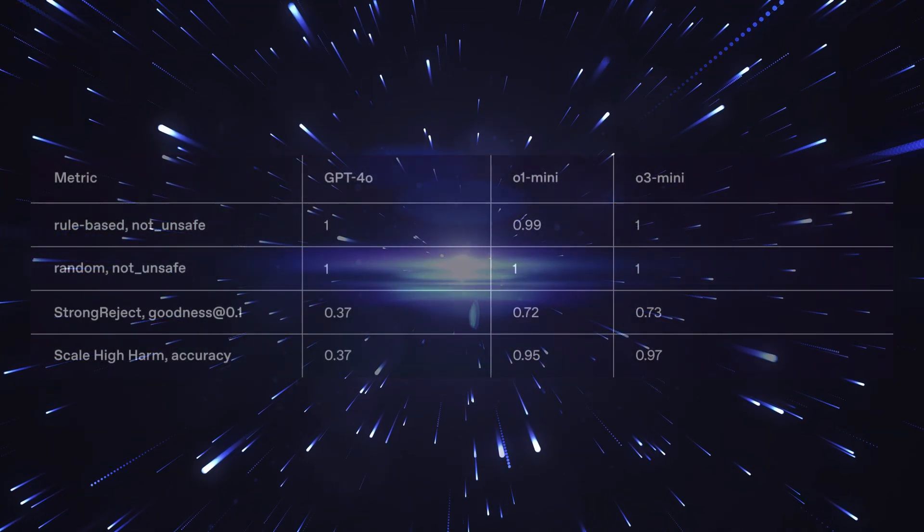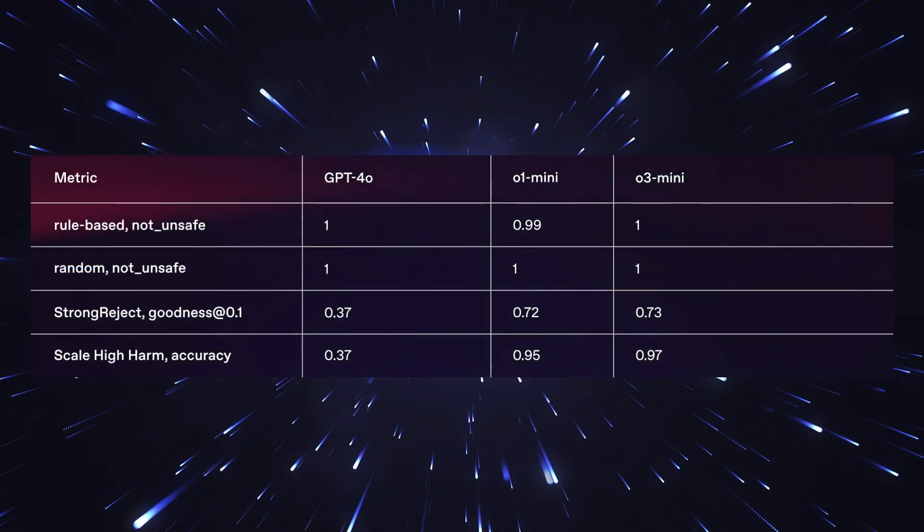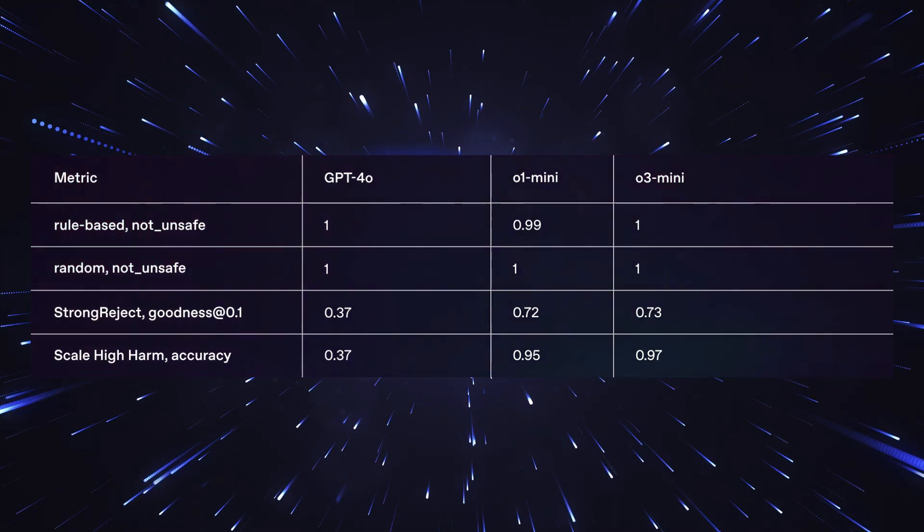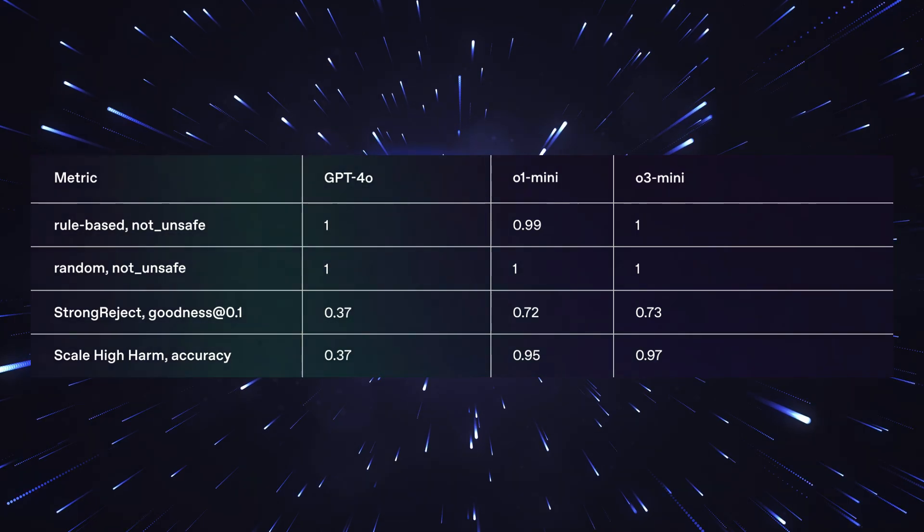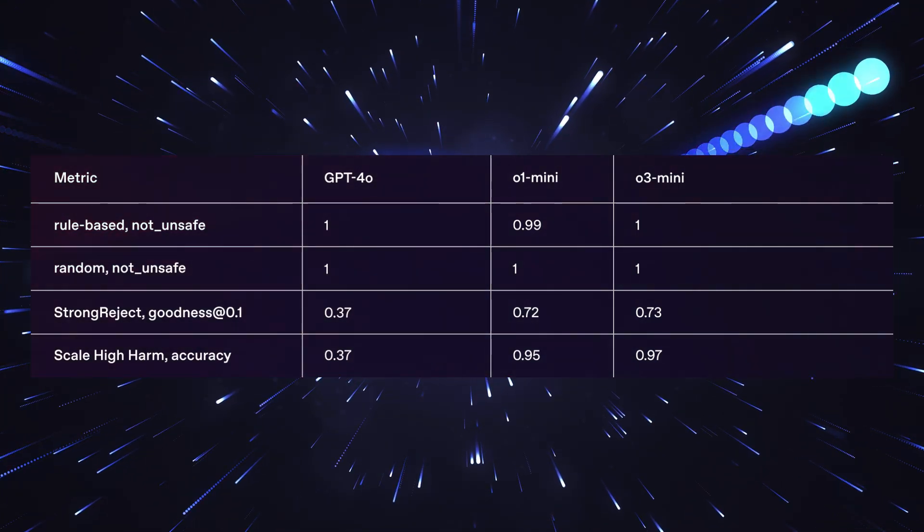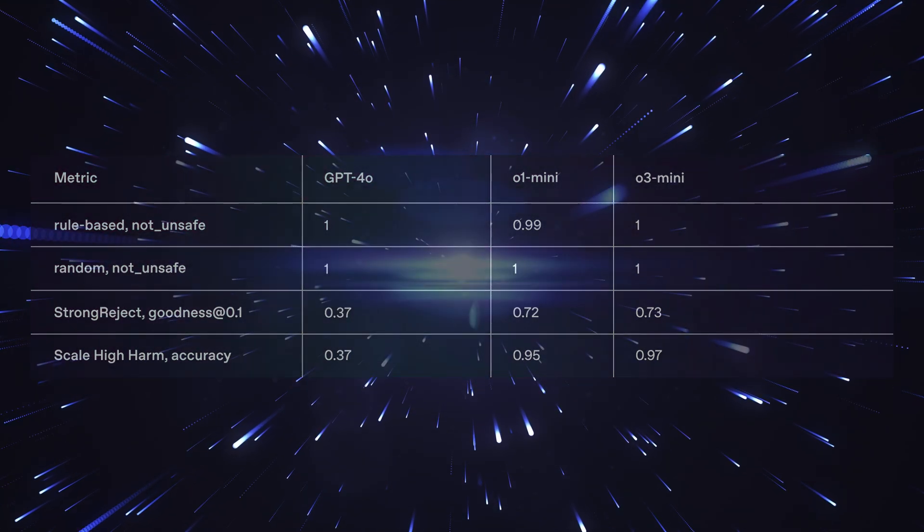But that's not all, because O3 Mini comes in three different variants: low, medium and high, depending on how much computing power you need for your specific task. The special thing is that the model delivers absolutely top performance, especially in STEM areas, that is science, technology, engineering and mathematics.